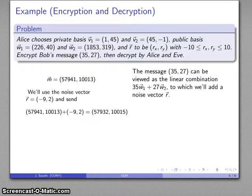Now I want to add in a noise vector, some sort of random vector. Our components are going to be between negative 10 and 10. Maybe I'll choose negative 9, 2. And so Bob then computes this as the encrypted value.